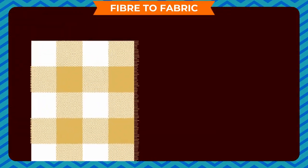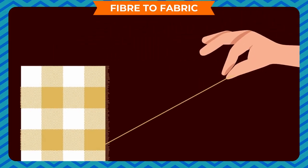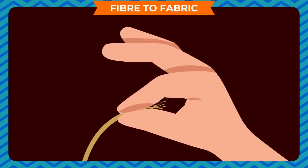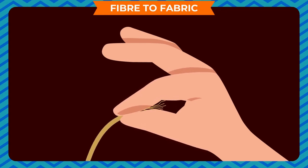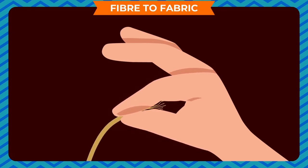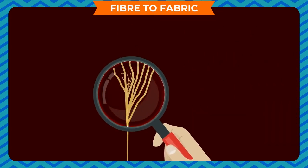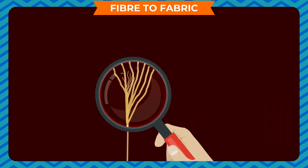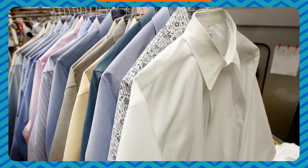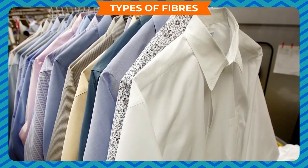Take a piece of cloth and pull out a thread. Untwist it to loosen the thread — you will see that it is made up of smaller threads or hair-like strands. Pull out one of these; the single hair-like strand is called a fiber. A fiber is a hair-like strand from which all fabrics are made.